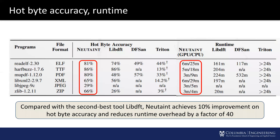We measure the hotbyte accuracy of NeuTaint against three state-of-the-art rule-based dynamic taint analysis tools on six programs covering six different file formats: ELF, TTF, PDF, XML, JPEG, and ZIP. We also compare the total runtime of NeuTaint and these tools. The results show that NeuTaint achieved on average 10% improvement in hotbyte accuracy while reducing runtime overhead by a factor of 40 over the second-best tool, libDFT.